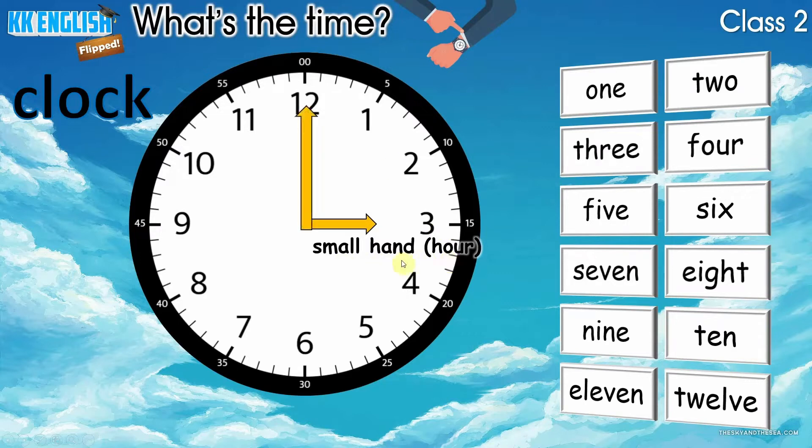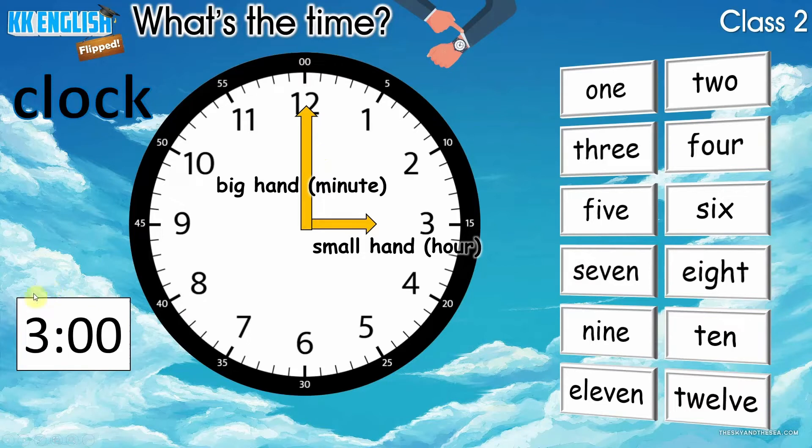We can also find the big finger. We call it the big hand. 那我们也可以在时钟上看到这个叫长针或叫分针。我们说 big hand. A big hand tells us the minute. 那这个长针或的分针会告诉我们是几分钟. Boys and girls, can you tell me what's the time on this clock? 同学们可以告诉我这时钟现在显示是几点钟吗?